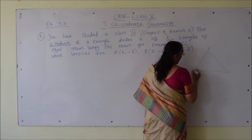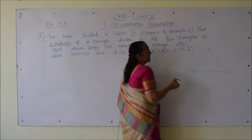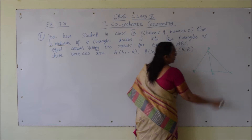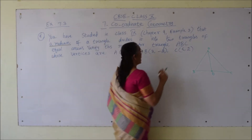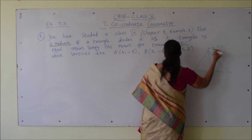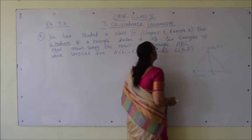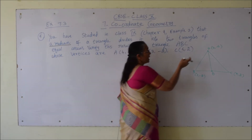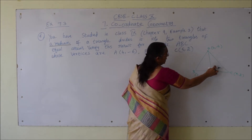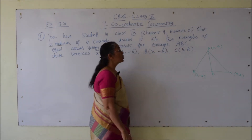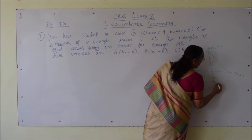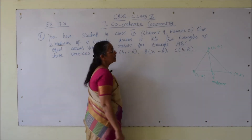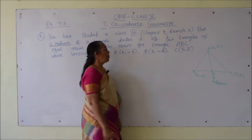Let ABC be the triangle. A median is a line segment drawn from the vertex to the midpoint of the opposite side, that is D. In the given problem, vertex A is (4, -6), vertex B is (3, -2), and vertex C is (5, 2). We have to find the area of triangle ABD and area of triangle ADC and prove that these 2 areas are equal. D is the midpoint, and AD is the median.